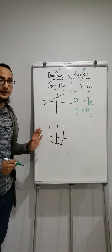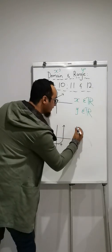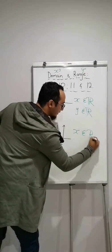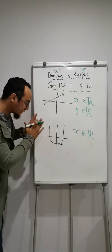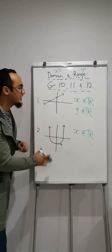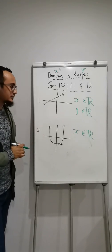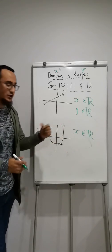The domain of a parabola, it will again be x is an element of real numbers over here. For grade 10, you only need to know what is the domain of any parabola: x is an element of real numbers. Element means part of.